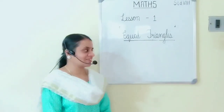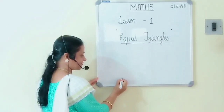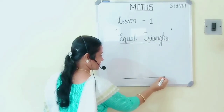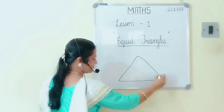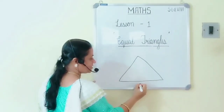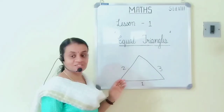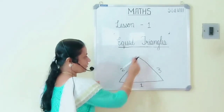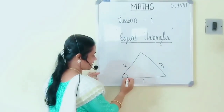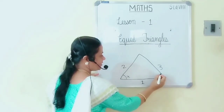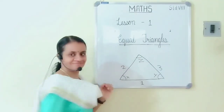Let us look at the board. A triangle is a closed figure with 3 sides and 3 angles. Let the first angle be X, second angle Y, and third angle Z.